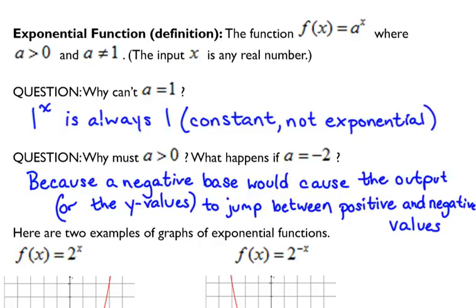Functions do typically have positive and negative values. Usually functions aren't strictly positive or strictly negative. That is actually the case with exponential functions. But you can't just keep on jumping back between the two. There's got to be some continuity, there's got to be a flow there, and there's not if you have a negative base.